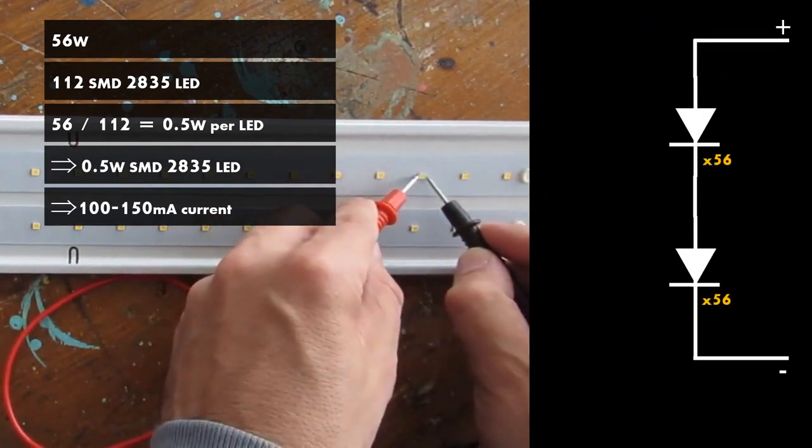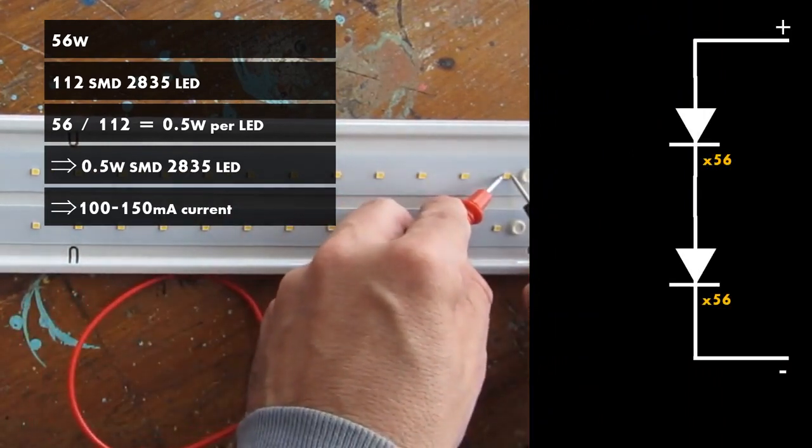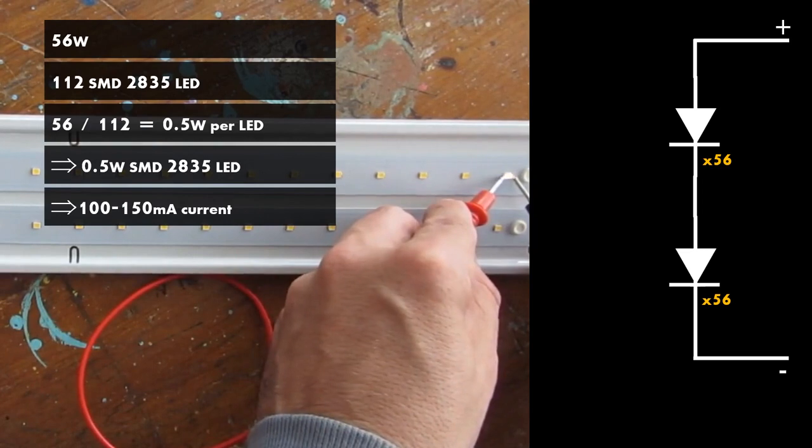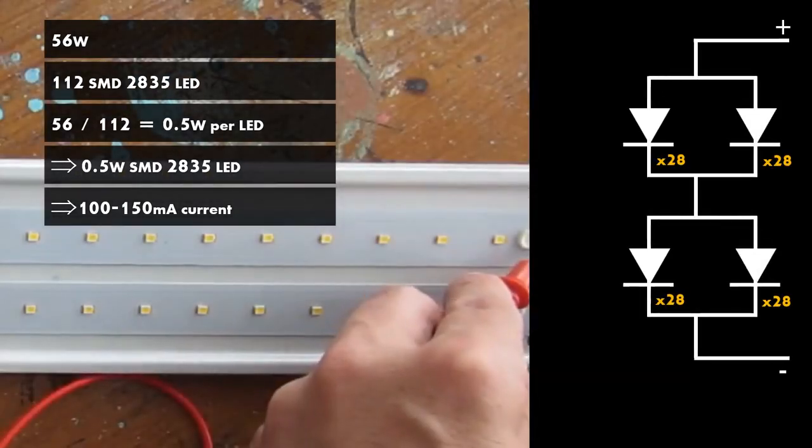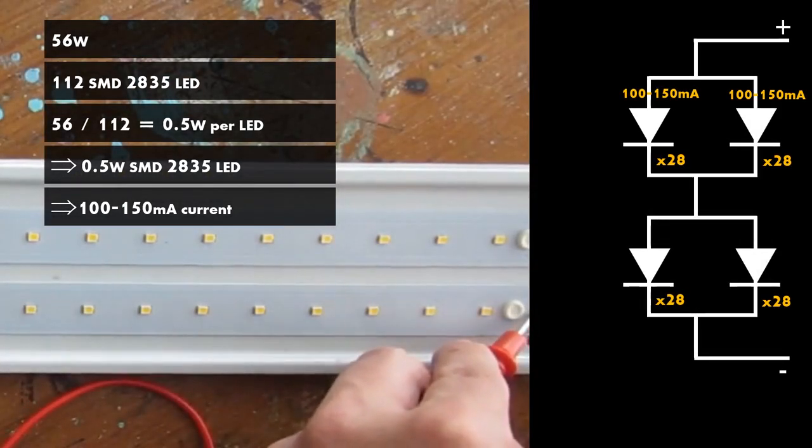The light is built of 2 times 56 LED strips connected in series. And each strip is made of 2 times 28 LED in series, both connected in parallel.